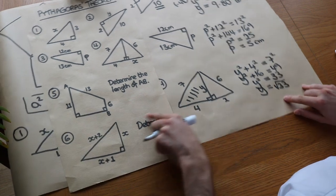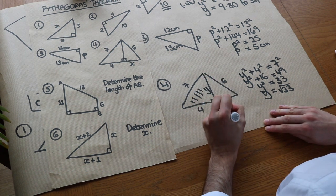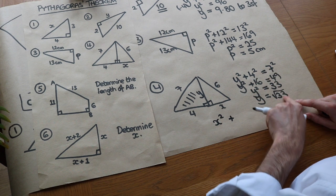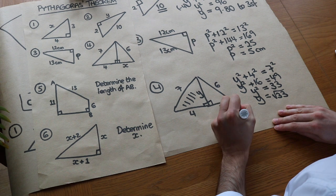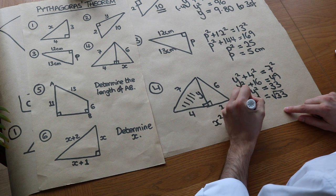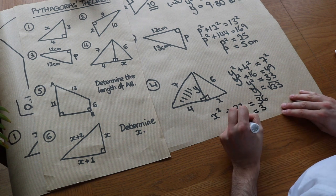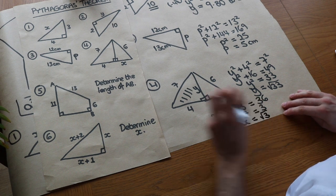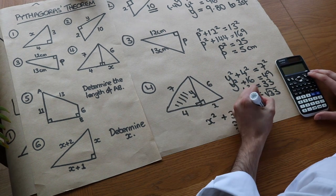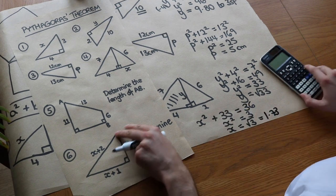Now focusing on the second triangle with sides x, y (= √33), and hypotenuse 6: x² + (√33)² = 6². Since (√33)² = 33, we get x² + 33 = 36. Subtracting 33: x² = 3, so x = √3. If an exact answer is required, leave it as √3. As a decimal to 3 significant figures, x = 1.73.